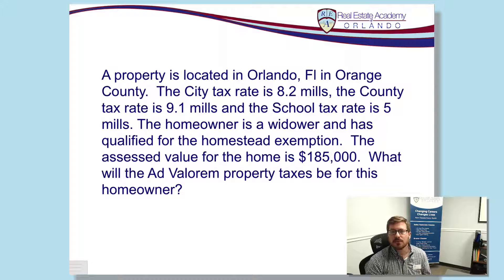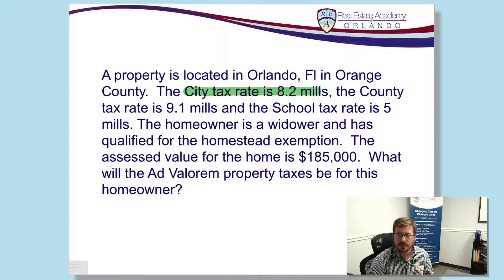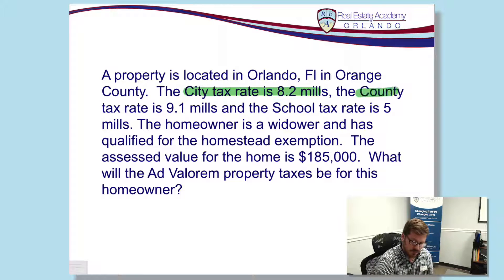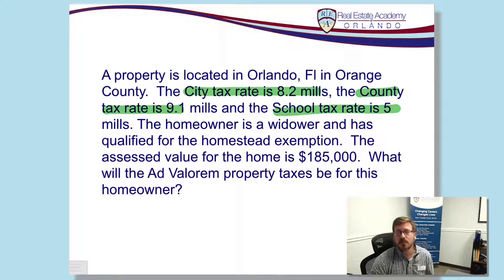Some important things we need to look at in the question itself. Starting with the city tax rate is 8.2 mils. We need the millage rate for each of the city, the county, and the schools — we're going to use them at the end to figure out our tax rate. The county millage is 9.1 mils, and the school tax is 5 mils. In a few moments, we'll convert the millage rate from mils to a decimal so we can use it in our calculation.